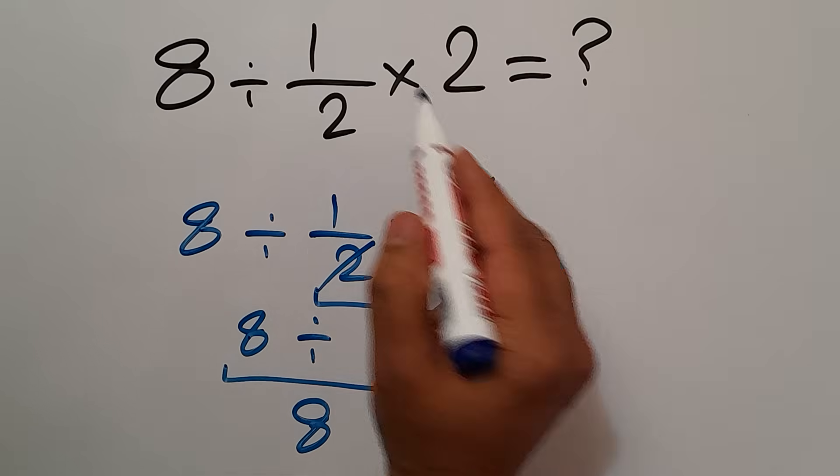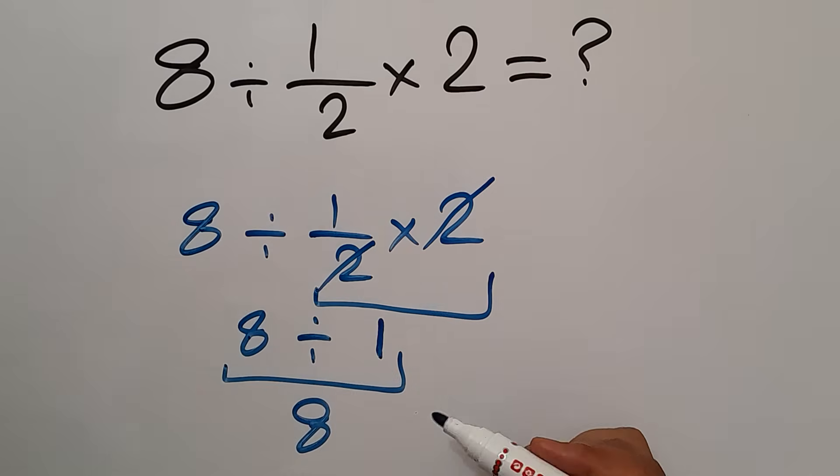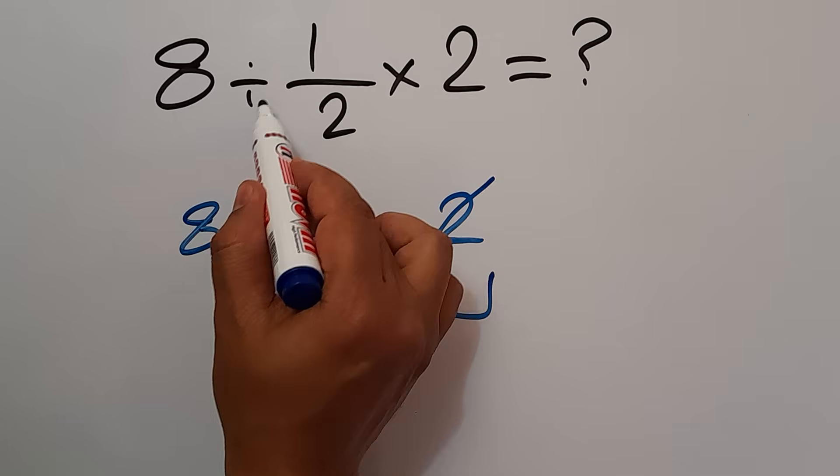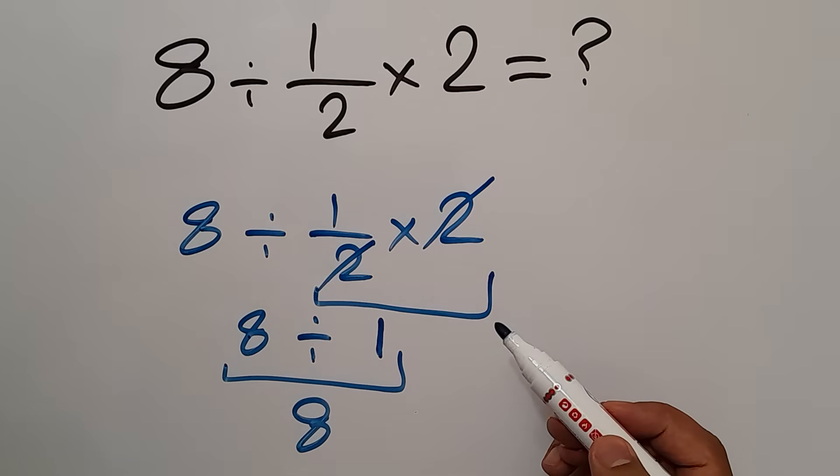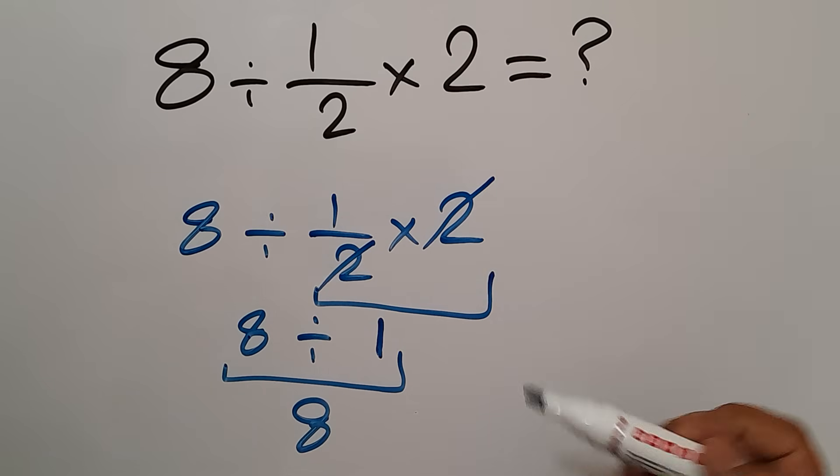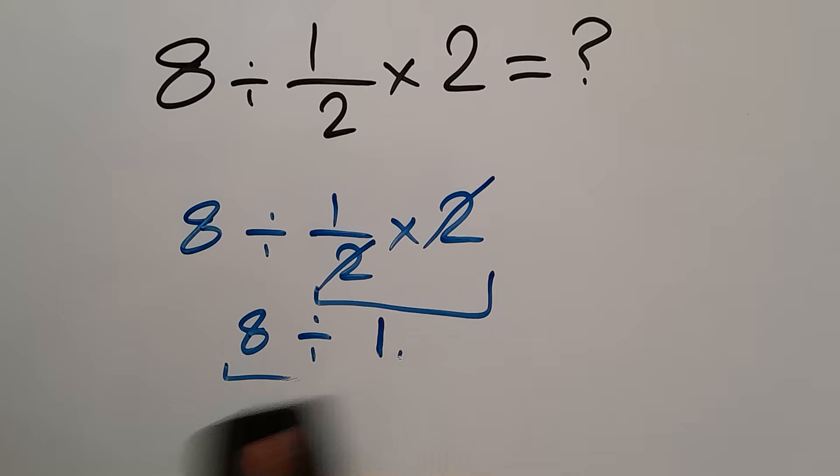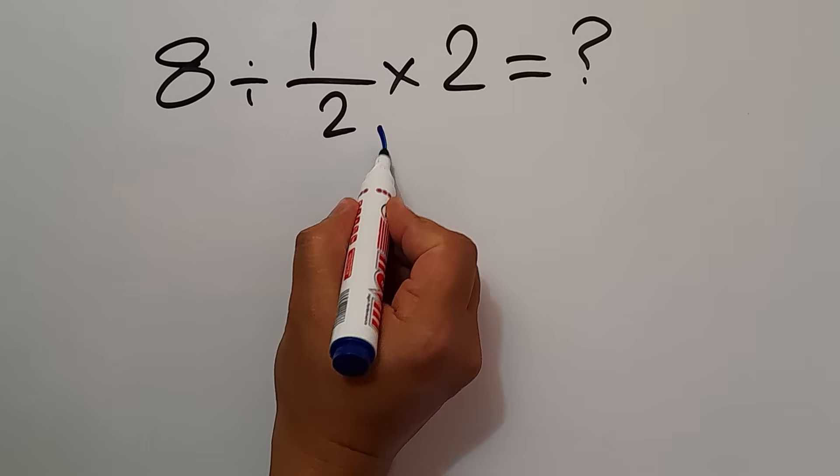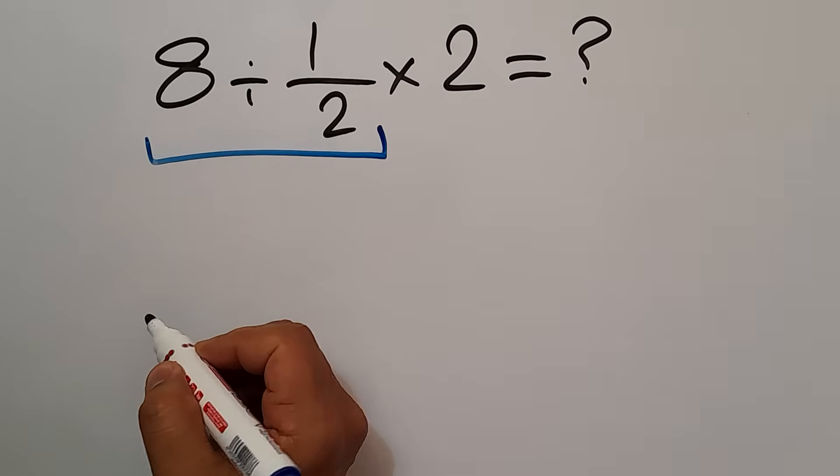multiplication and division have equal priority and we have to go from left to right. So first we have to do this division, then this multiplication. So 8 divided by 1 over 2, according to the